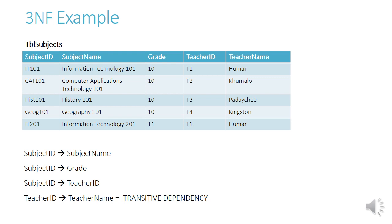Let's do an example of third normal form. We have a table of subjects with subject ID, subject name, the grade to whom the subject is taught, teacher ID, and teacher name. Subject name, grade, and teacher ID are all dependent on subject ID. But teacher name is dependent only on teacher ID, which is not the primary key — so that is a transitive dependency.